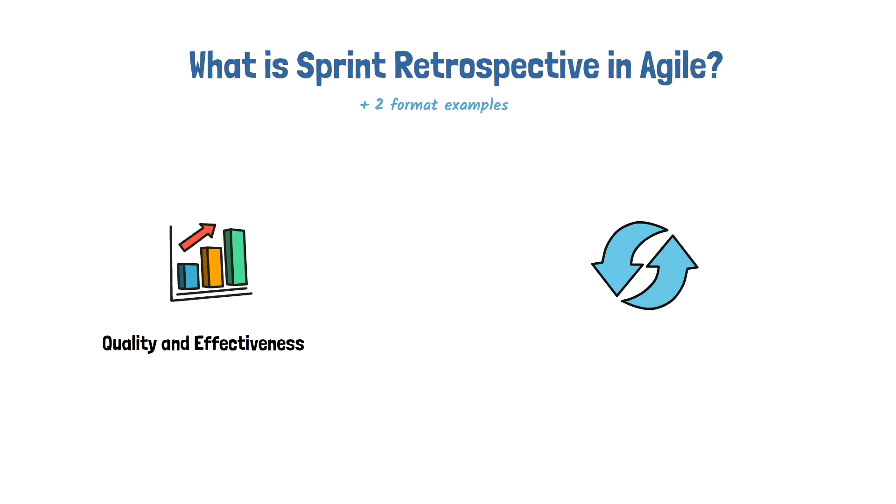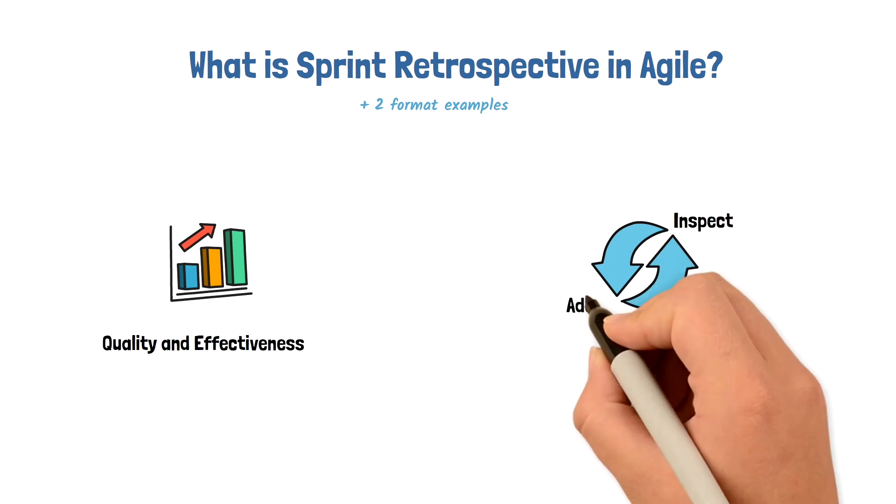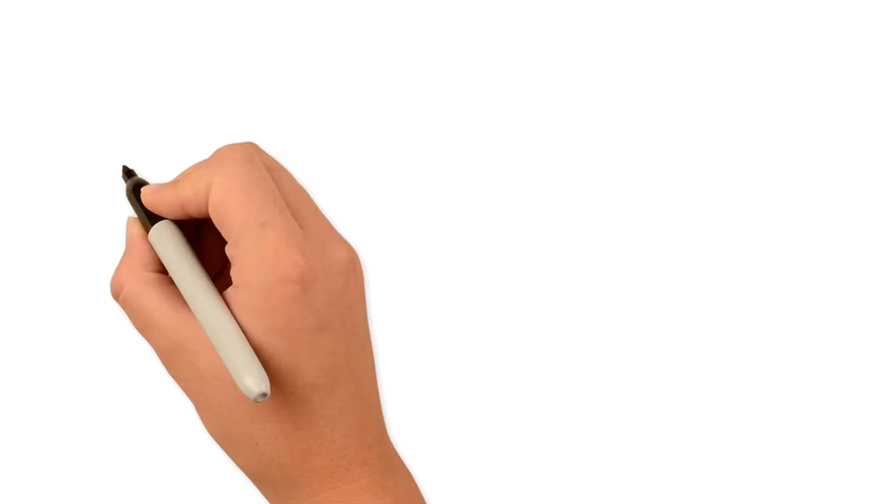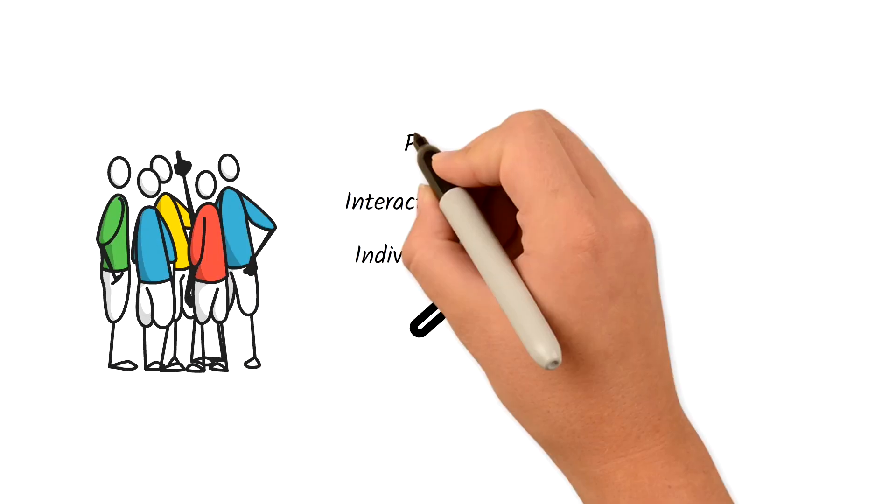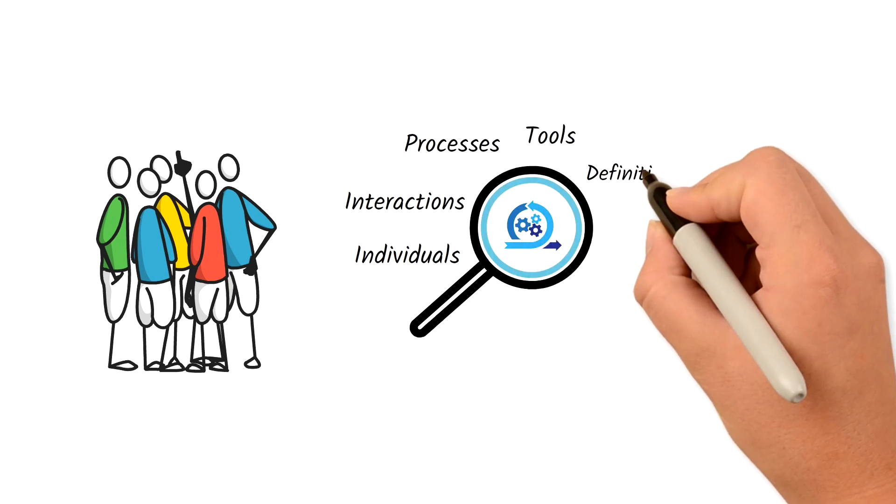The Sprint Retrospective is an opportunity to inspect and adapt the process. The Scrum team inspects how the last Sprint went with regards to individuals, interactions, processes, tools, and their definition of done.